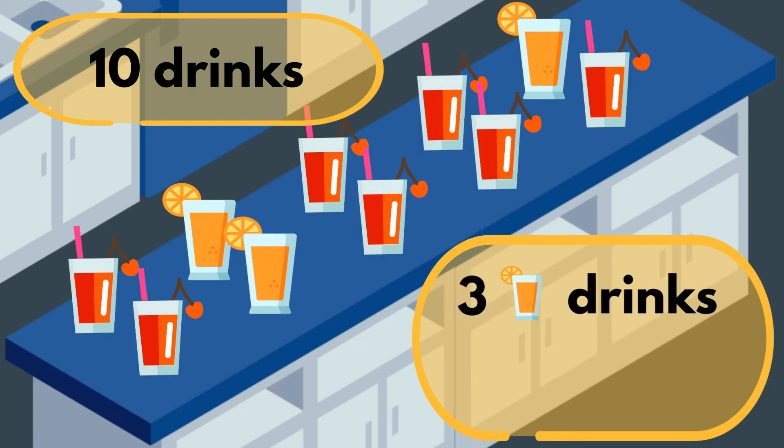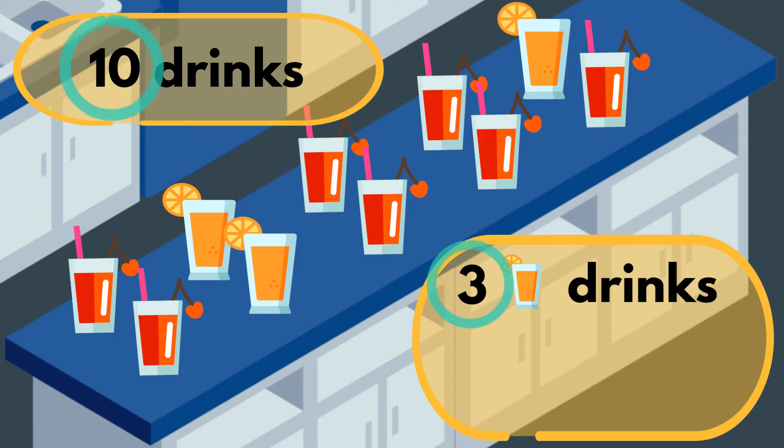Likewise, if we know how many orange drinks there are, along with the total number of drinks, we can figure out the number of cherry drinks.